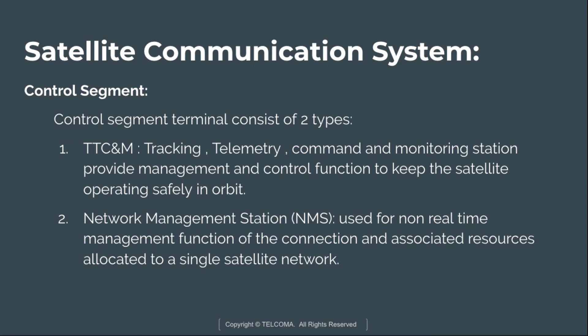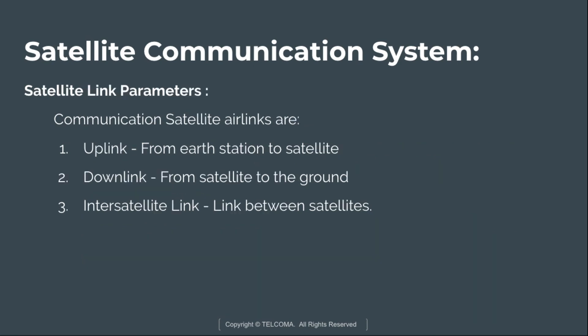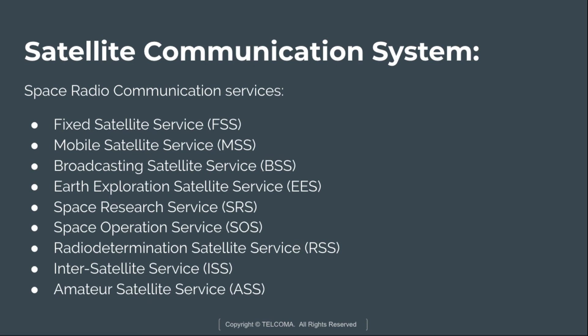Satellite link parameters: communication satellite air links are of three types. The first is the uplink, from earth station to satellite. The second is the downlink, from satellite to ground. The third is the inter-satellite link, which is the link between satellites in space.